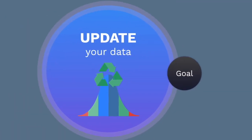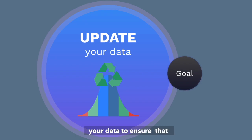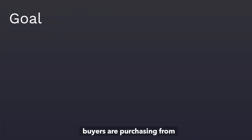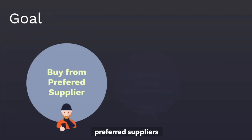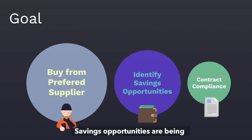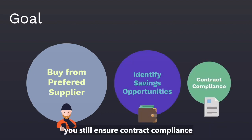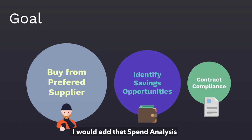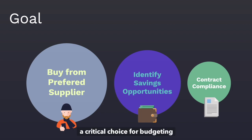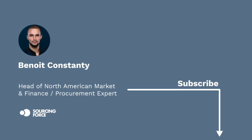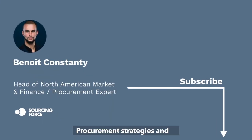Step 6: you'll have to continuously update your data to make sure that buyers are purchasing from preferred suppliers, savings opportunities are being identified, and you maintain contract compliance. Spend analysis is good, but spend analytics is an even more critical choice for budgeting and identifying tremendous savings in 2019, and procurement strategies and sourcing can really emerge from it.